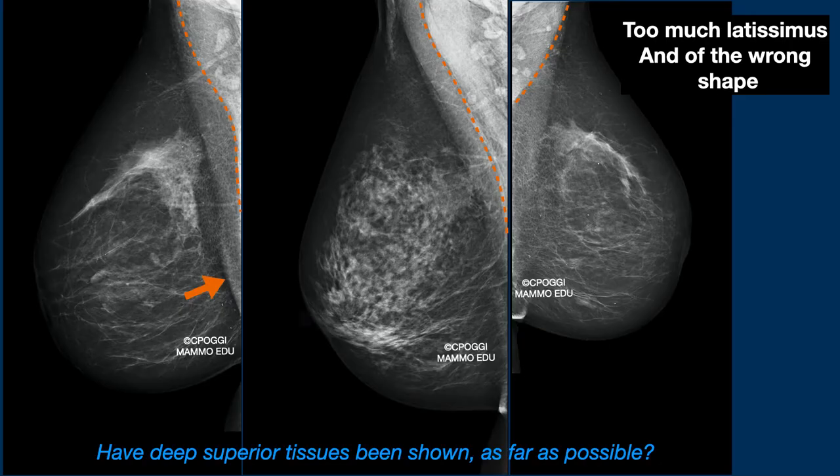Attention should be paid to the latissimus dorsi documentation, which should appear as a triangle in the upper inner corner of the image. Here you can see examples of exaggerated documentation of latissimus, usually associated with the creation of more or less important faults. The patient here is too much forward onto the detector, with the lateral deep tissues.